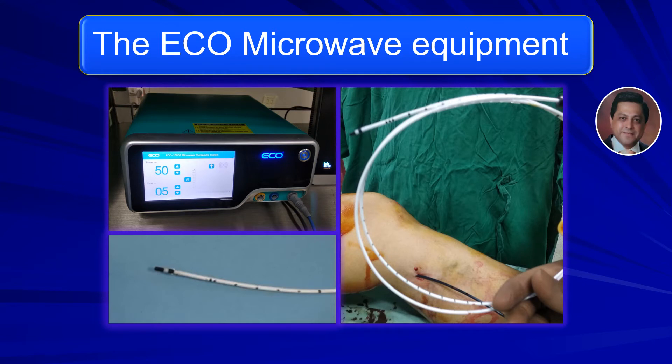Now this is a photograph of the microwave equipment. As you can see, there is a microwave generator which generates the microwaves, and the energy usually delivered is about 50 watts in veins above the knee joint. This is delivered into the veins by a special microwave catheter, and the tip of the catheter is the one that generates the microwaves and delivers it into the vein.